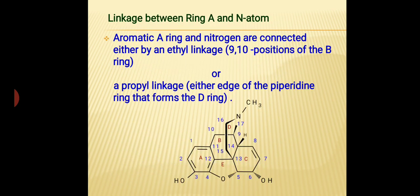Now we talk about the linkage between ring A and the nitrogen atom. If we start from ring A and wish to reach the nitrogen atom, we have to consider 3 pathways. The first one: starting from position 11, then going to position 10, then 9, and we reach position 17. In this pathway, we pass through carbon atoms 10 and 11, meaning there is an ethyl linkage between position 11 and position 17.